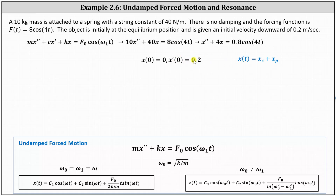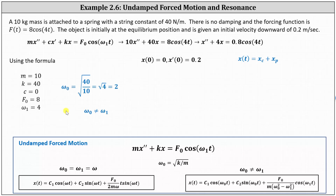Note that the initial velocity is positive because the velocity is downward. The general solution x(t) equals the complementary solution x_C plus a particular solution x_P, but here we use the formulas directly. Listing all given information: m = 10, k = 40, c = 0. From the forcing function F(t) = 8cos(4t), F₀ = 8 and ω₁ = 4. Computing ω₀ = √(k/m) = √(40/10) = √4 = 2. Since ω₀ = 2 ≠ ω₁ = 4, the general solution takes the form shown on the right.